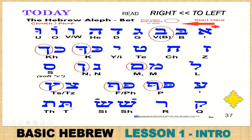Sometimes they will pronounce the ones without a dot as a T — it is not always a tight 100% rule. Sometimes words will be spelled the same letter but some will be hard or soft. You will see this with the KH and CH — sometimes they switch it around.